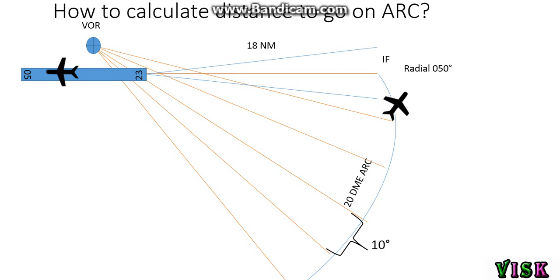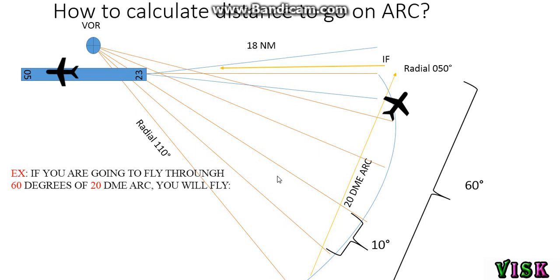First of all, we must know the radial involved from initial fix to VOR, and we know the degrees from radial 110 to radial 50 is 60 degrees. Then follow how to calculate from this point to this point. For example, if you are flying 60 degrees on a 20 DME arc, you will find the formula is 2π multiplied by DME multiplied by degree and divide by 360, equals 20.9.